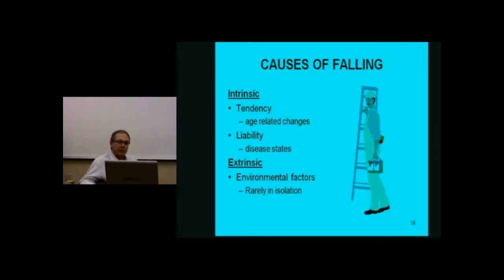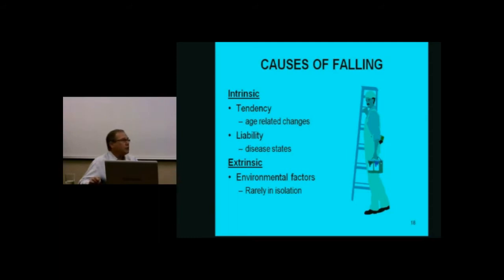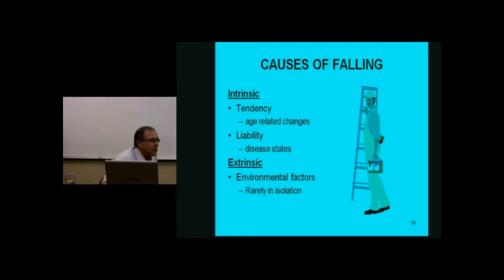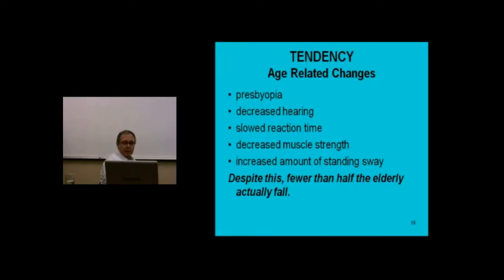There are causes intrinsic to the patient and causes in the environment. The intrinsic ones are more important because most elderly people face the same extrinsic environmental hazards we do — they just don't have the capability to cope because things have changed intrinsically. That doesn't mean we shouldn't alter the environment to make it safer, but that's only going to be part of the answer. Some age-related changes: your eyes change. Diseases like cataracts, glaucoma, macular degeneration come with age. The ability to focus quickly from far to near declines — that's why we need reading glasses. The lens also yellows with age, so some contrasts in textures on surfaces change.